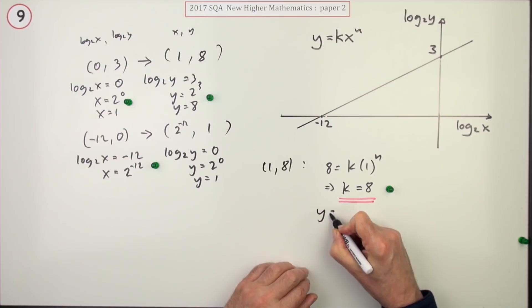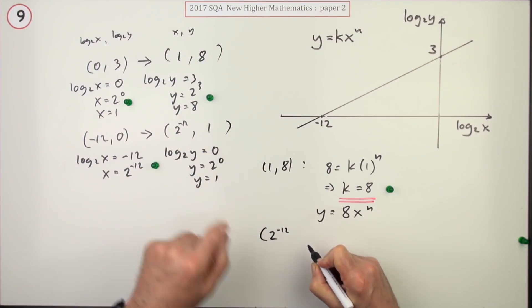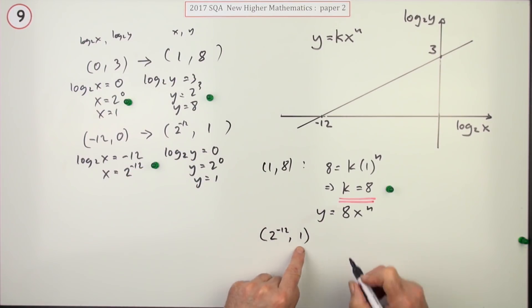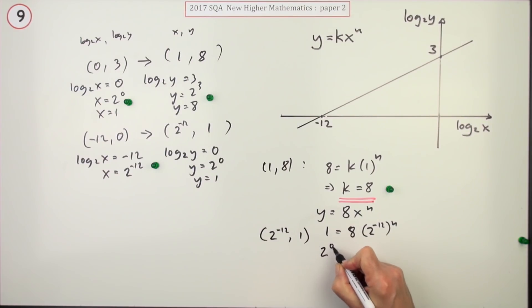Now that you know k is 8, you can now write y equals 8x to the n when you come to use the next point, which unfortunately is this one, negative 12, 1. And that would read 1 is 8 times 2 to the negative 12 to the power n. That's a messy little thing to deal with, but they are all, after all, powers of 2. So maybe I should just rewrite that as, that's 2 to the power 0, that's 2 to the power 3 times, and that's 2 to the power negative 12n. And if you're multiplying terms you add the powers, so that's 2 to the power 3 minus 12n. Now if those numbers are equal, the powers are equal, that means that 3 minus 12n is 0, so 12n is 3, so n is a quarter.